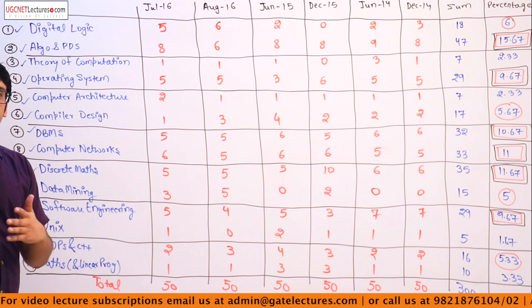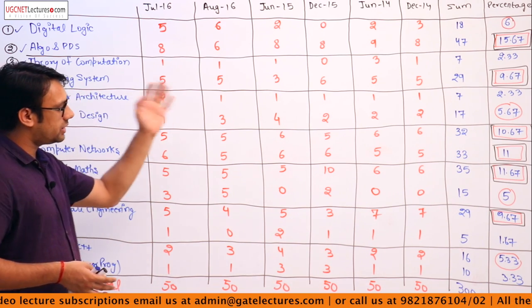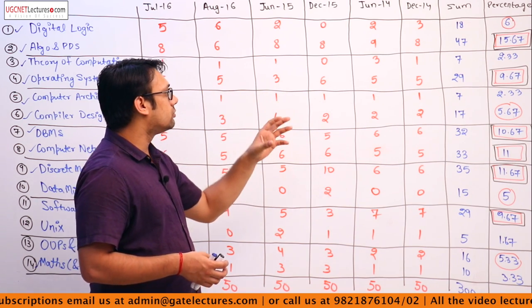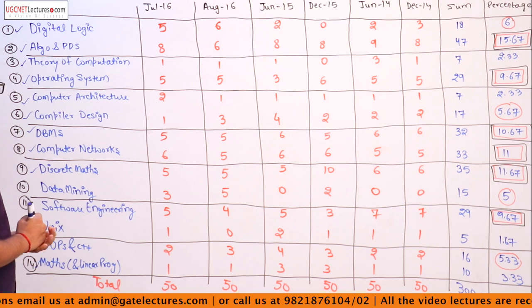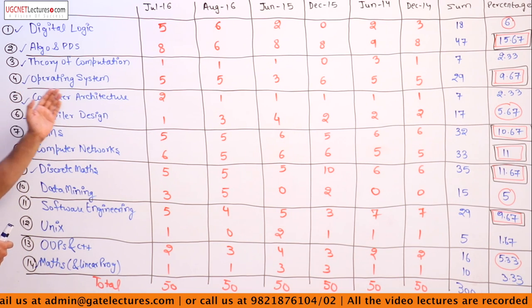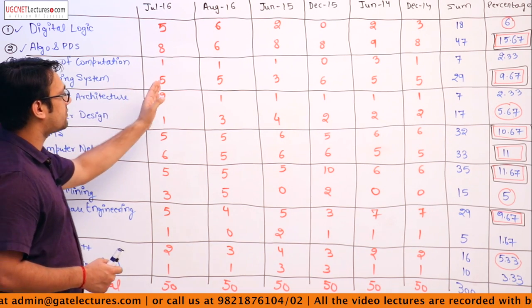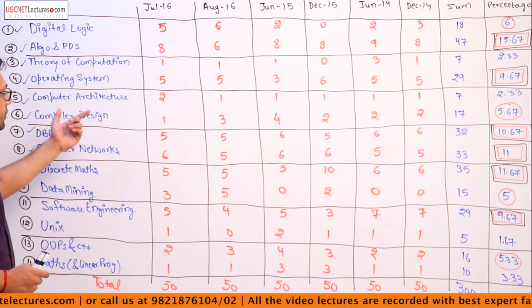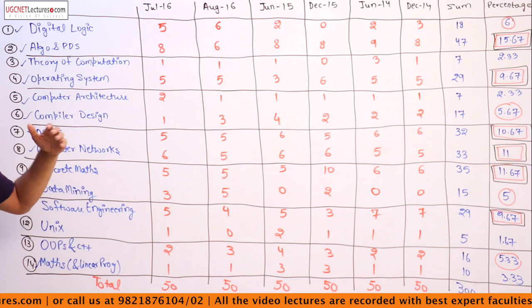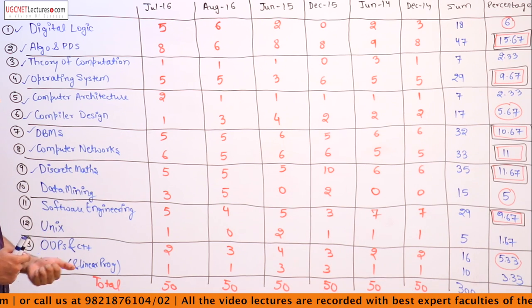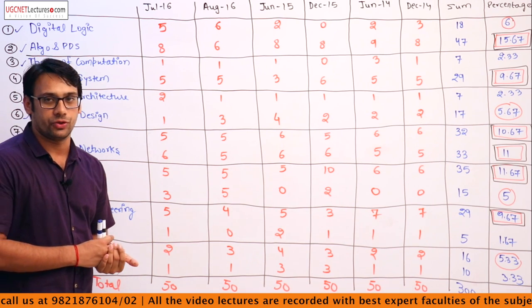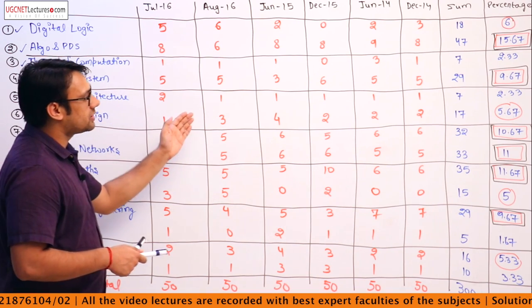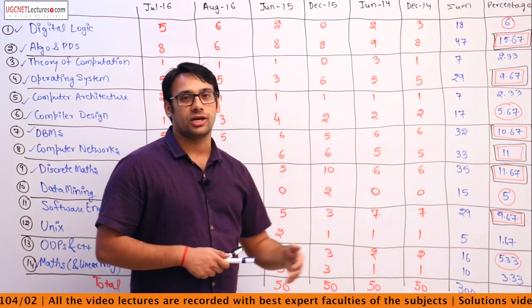We will do a separate analysis for Paper 3. This analysis lays out a plan for what subjects you should focus on to get a good rank in UGC-NET. For operating system, the number of marks across the years is 5, 5, 3, 6, 5, 5 and so on. For Paper 2, computer architecture has very low weightage — around 2% of the questions are from computer architecture in Paper 2.